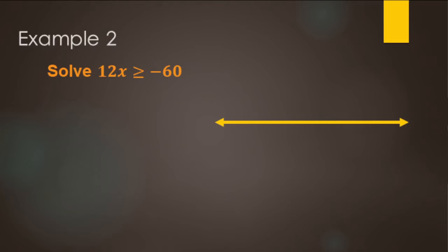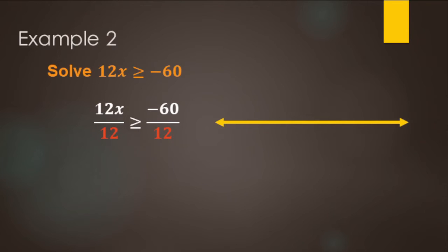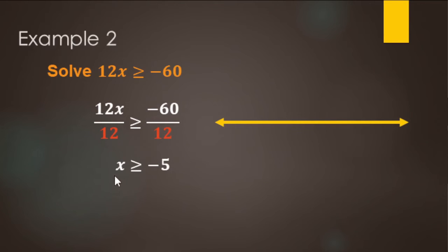Pause the video and try this one. We're going to solve 12x is greater than or equal to negative 60. We need to undo the multiply by 12 with a divide by 12. We are dividing by a positive 12, so we are not going to switch the direction of the inequality. Just because we have negatives in our question doesn't mean we switch the direction — this is a very common mistake. You look at the number you're dividing by. Dividing by 12 gives negative 5, so x is greater than or equal to negative 5. On the number line, we have 0 and negative 5; it's a shaded circle because negative 5 is a solution, and we shade all numbers to the right.